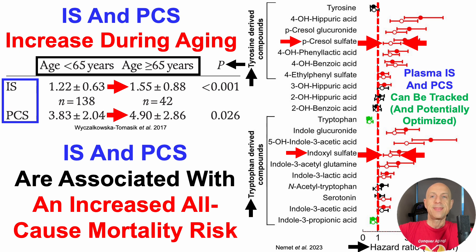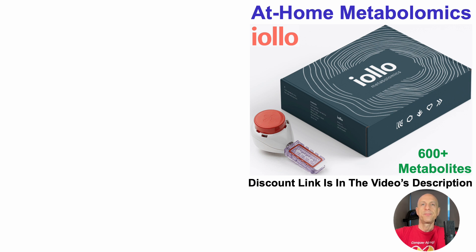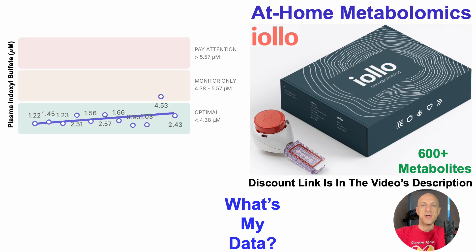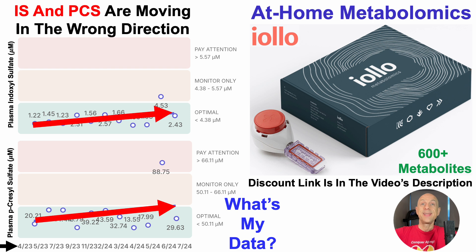The good news is that these metabolites can be tracked and potentially optimized. I've been using at-home metabolomics with IOLO's kit, which besides these two metabolites includes 600-plus others. My data for plasma levels of indoxyl sulfate and p-cresyl sulfate span from April 2023 through July 2024 — 11 tests. As you can see from the trend line, it's going in the wrong direction; ideally I'd want it to be flat, resisting age-related change over this 14–15 month period.